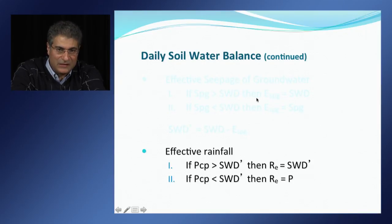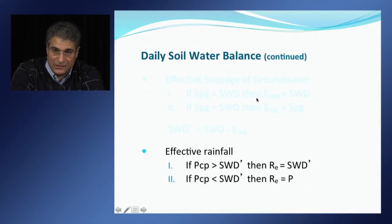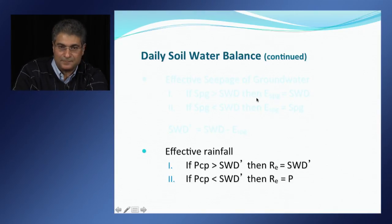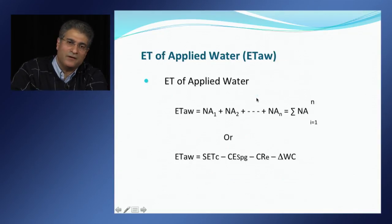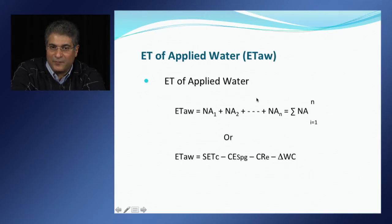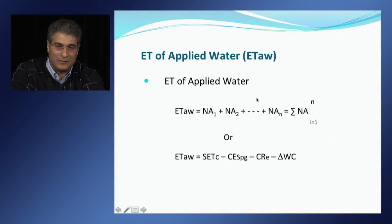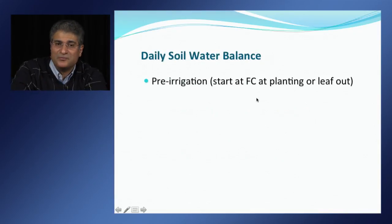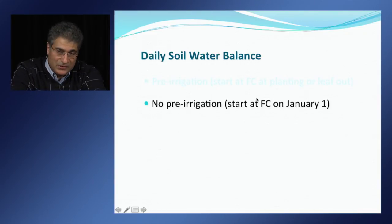If precipitation depth is greater than the adjusted soil water depletion, then effective precipitation equals soil water depletion; if precipitation is less than soil water depletion, then effective precipitation equals precipitation. ET of applied water, as mentioned earlier, is the sum of net application over a growing season, or alternatively estimated as seasonal crop evapotranspiration minus seasonal effective seepage of groundwater, minus seasonal effective rainfall, and minus the change in soil water content from beginning to end of season. If a crop is pre-irrigated, soil water depletion is set to zero; otherwise it is determined by water balance during the off-season before planting or leaf-out.